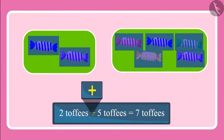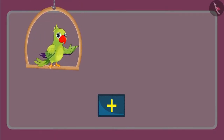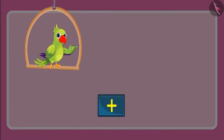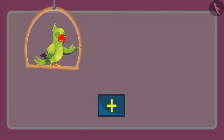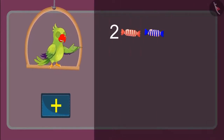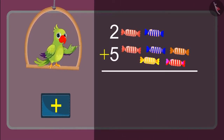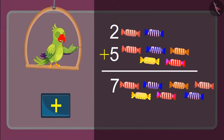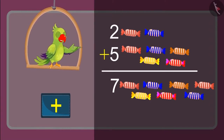Children, do you know what symbol this is? Yes, this is the symbol of addition. We can write it in one more way. This means when we added five toffees to two toffees, then we got seven toffees. You also got the same answer, right? Excellent!